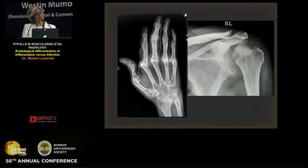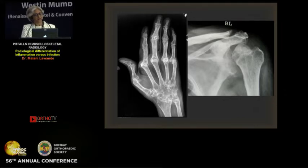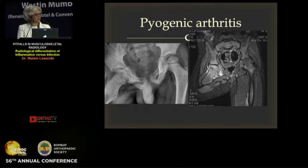By the time the changes are evident on radiograph, it's a little later in the disease, so by that time many things are more clear — the patient already has polyarticular findings and other history. So this is a typical rheumatoid arthritis while this is tuberculous. But I'll concentrate more on MRI, because that is where we do early imaging and that is where the differentiation is many times a problem.